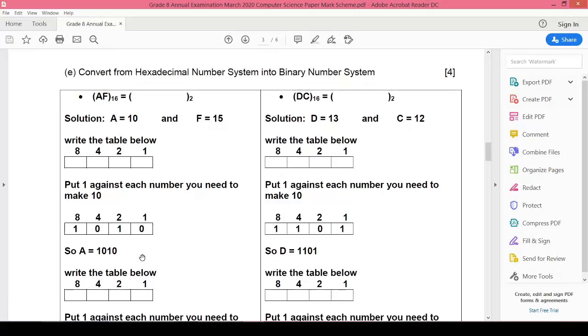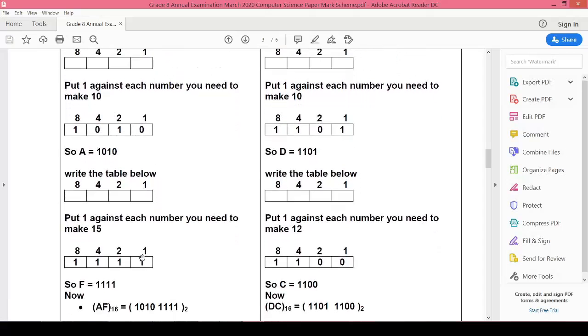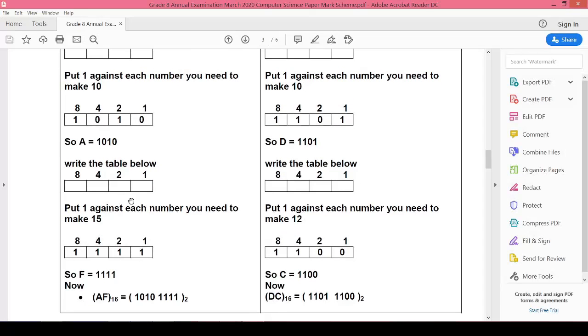We will use the same method for 15. Look here, we will make the box with four columns and we write on the top 1, 2, 4, and 8. Now what makes 15? For 15 means 8 plus 4 plus 2 plus 1.